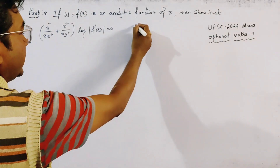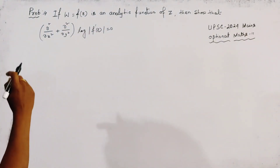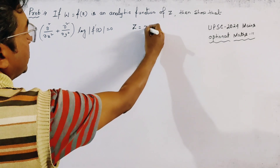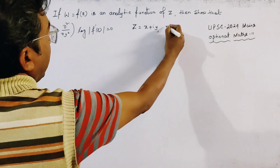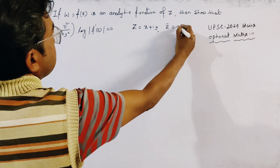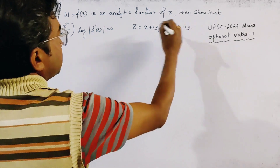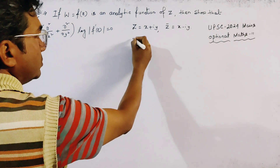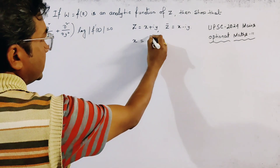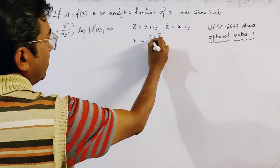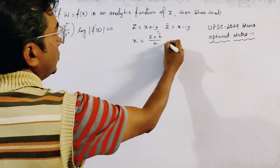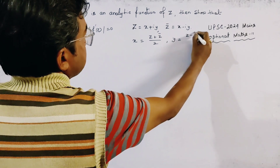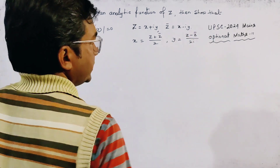We start from the basics. We know that z is a complex number, z = x + iy, and z̄ = x − iy is the conjugate complex number. From these two terms we get x = (z + z̄)/2 and y = (z − z̄)/2i.